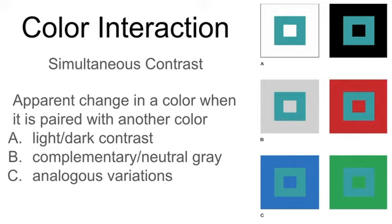Colors are rarely seen in isolation and they tend to influence one another. Simultaneous contrast is the apparent change in color when paired with another color. The three principles of simultaneous contrast are depicted to the right. The first one is light and dark contrast. In example A, you see that this turquoise square looks a lot darker on the white background and a lot lighter on the black background.